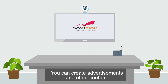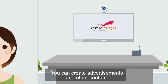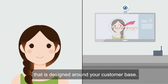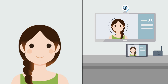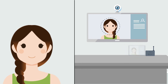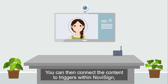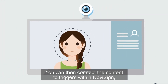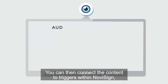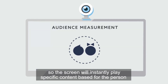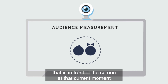You can create advertisements and other content that is designed around your customer base. You can then connect the content to triggers within NovaSign so the screen will instantly play specific content based on the person that is in front of the screen at that current moment.